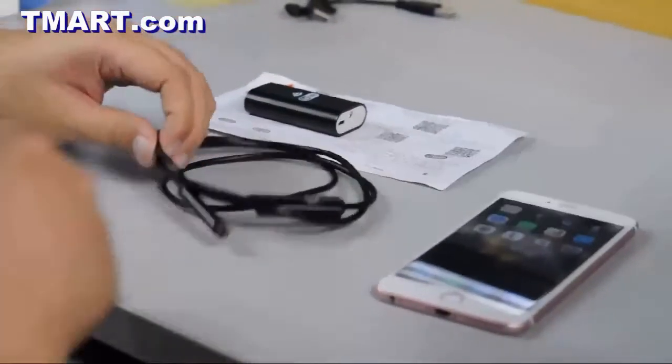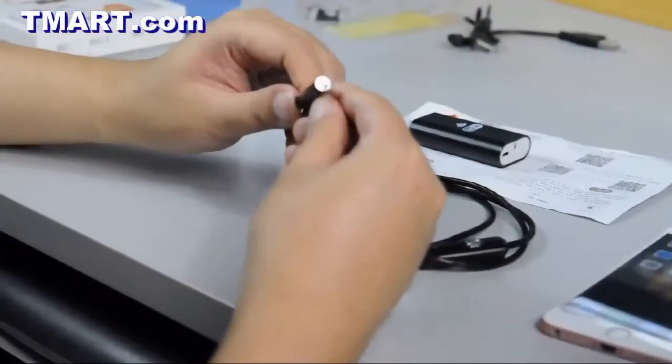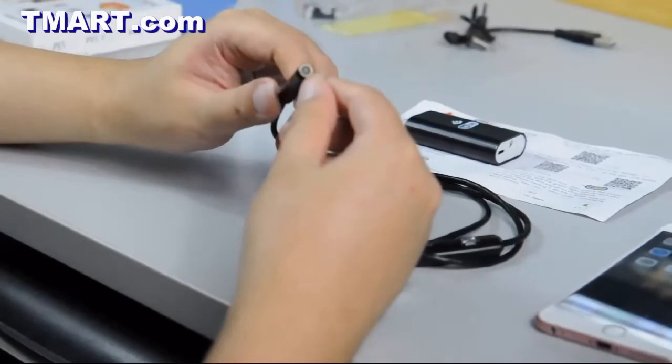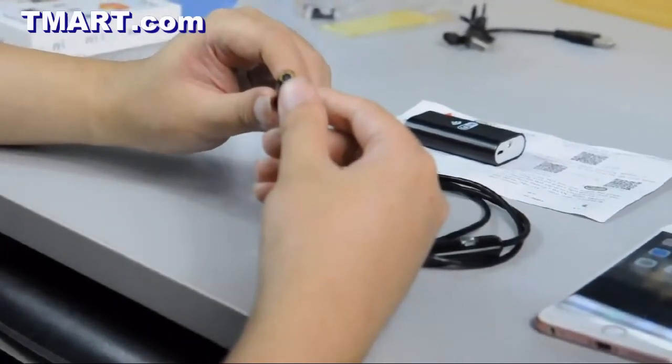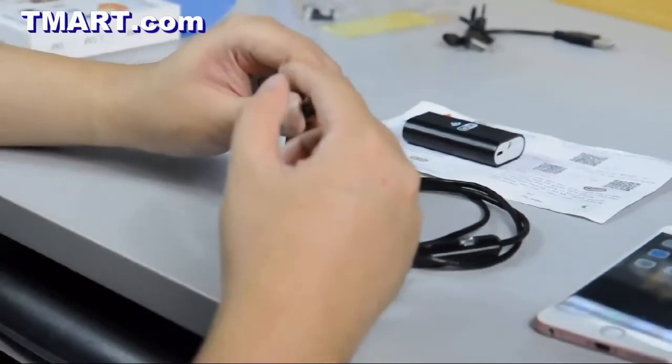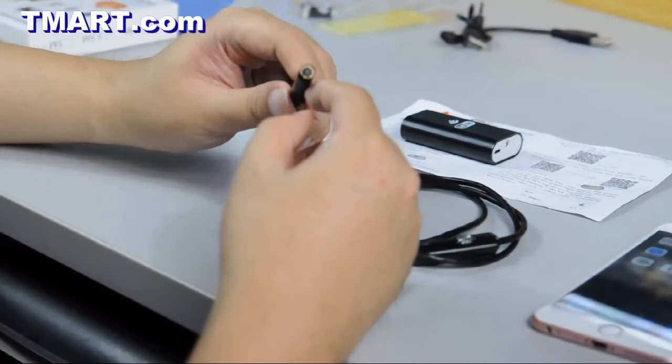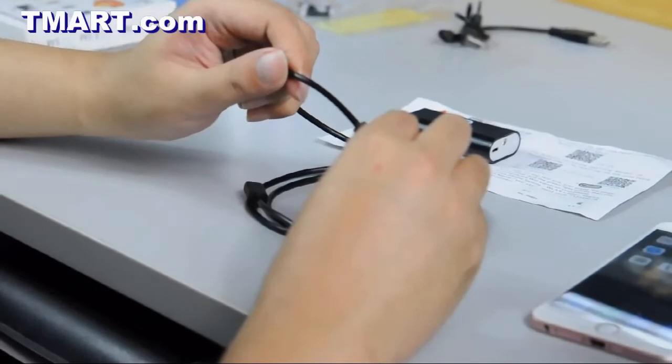Let's have a closer look at the camera unit itself. Now the housing for the camera has an 8mm diameter. The middle is a CMOS camera which has a resolution of 720p. And surrounding the camera are 6 white LEDs. And this cable is sealed so it's waterproof.